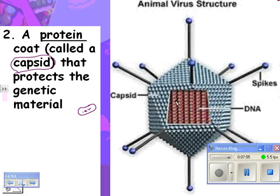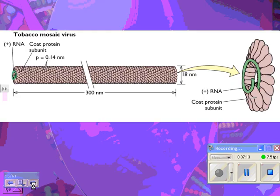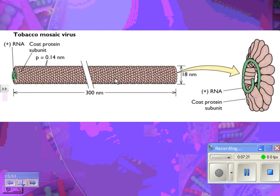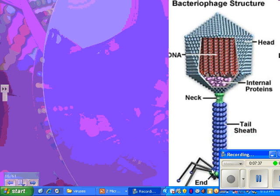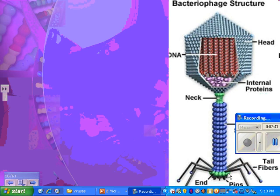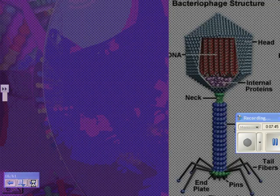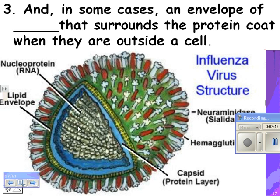There's no goop inside a virus — no cytosol, no organelles, not even ribosomes. All it is is DNA or RNA with a protein around it. For example, in the tobacco mosaic virus, there's RNA protected by protein on the outside, and it attacks the tobacco plant. A bacteriophage looks like a hypodermic needle — that's essentially what it is. Some viruses also get a lipid envelope from the outer membrane of the cell they infected, surrounding the protein coat when they're outside the cell.